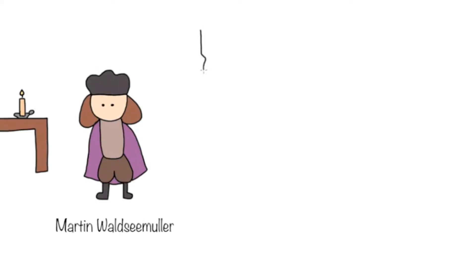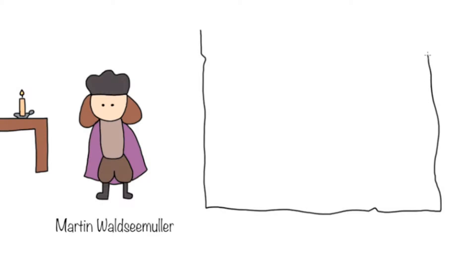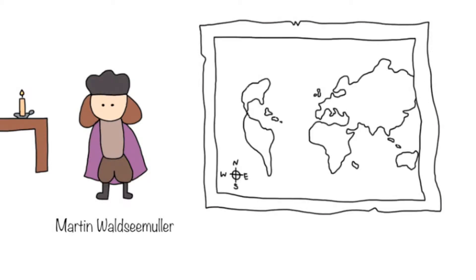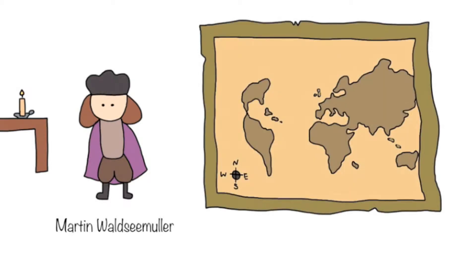In 1507, a German cartographer by the name of Martin Waldseemüller created a map, and on it he labeled the newly discovered lands 'America' in honor of Amerigo Vespucci.